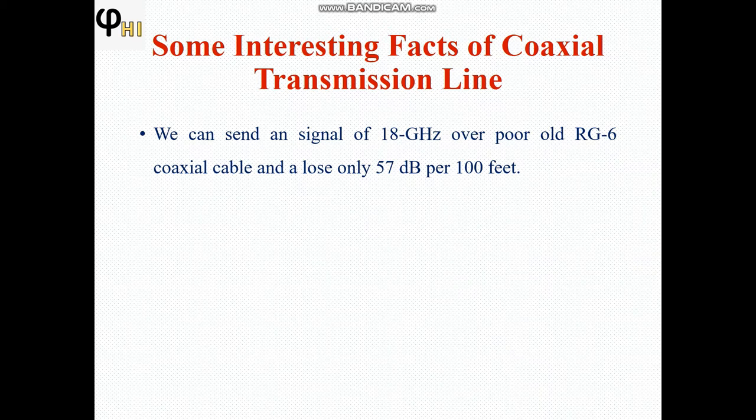We can use the coaxial transmission line up to 100 GHz. Small-size coaxial lines can handle more power and can also interface with waveguides. We can send a signal of 18 GHz over a standard RG6 coaxial cable with a loss of only 57 dB per 100 feet.